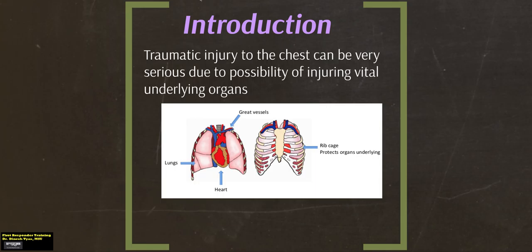Traumatic injury to the chest can be very serious due to the possibility of injuring vital underlying organs. As we can see here, the lungs, the heart, and some of the large blood vessels are underlying the ribcage in the chest area. Damage to any of these structures places the patient at risk of death.